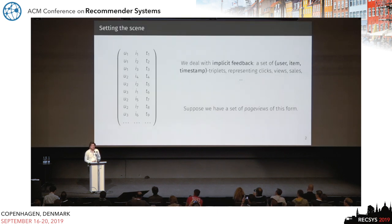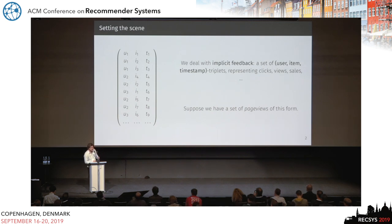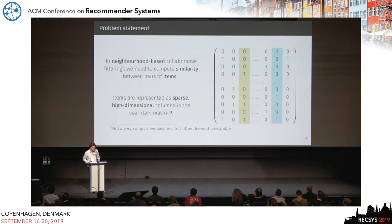To set the scene, we're going to be talking about dealing with a dataset containing implicit feedback. You have basically user, item, and timestamp triplets. These can be clicks, or views, or sales, or whatever you want — we will call them a set of page views in this talk. In neighbor-based collaborative filtering, you actually want to compute the similarity between these pairs of items.